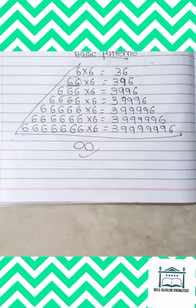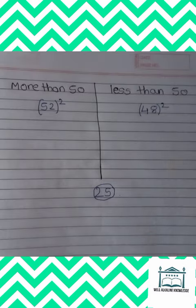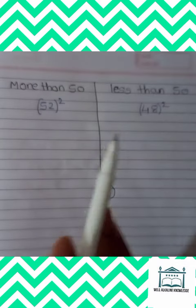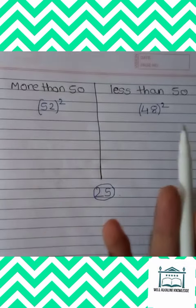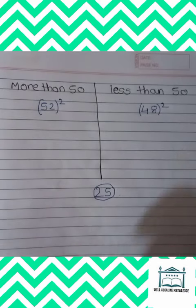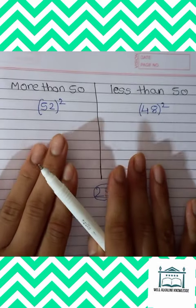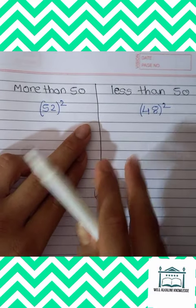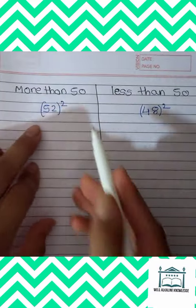So let's start with another trick of squares, finding squares. This is the second trick: finding squares between 11 to 99. For understanding, I am going to make two halves. One half is for more than 50, and another is less than 50.